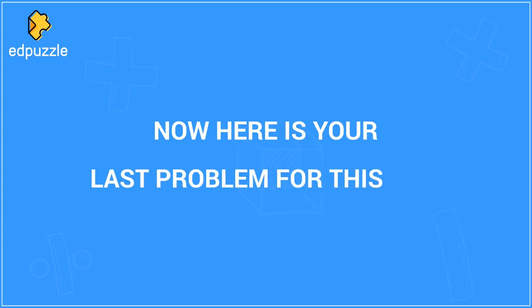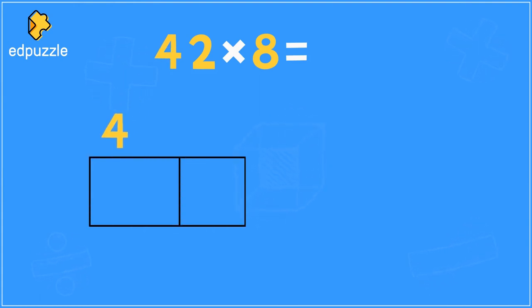Now here's your last problem for this video. Use an area model to solve 42 times 8. Well, on your area model, you can break up 42 into 4 tens, or a value of 40, and 2 ones, or a value of 2. Then you multiply each of these pieces by 8.